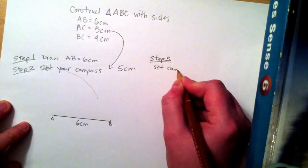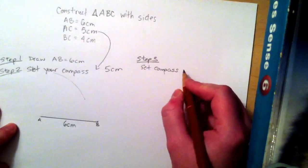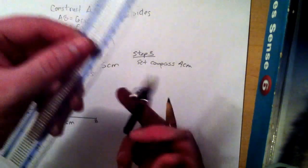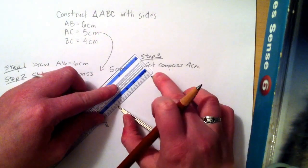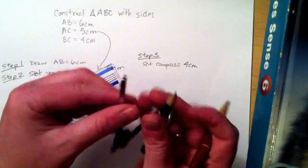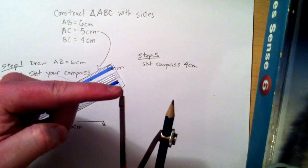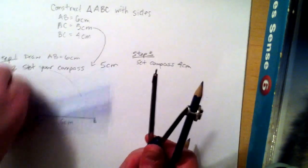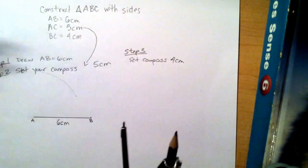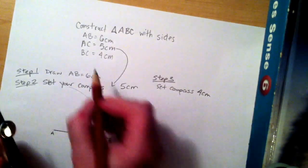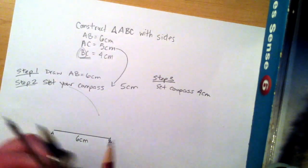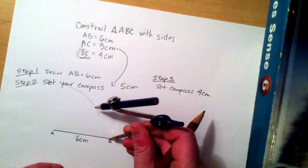Step 3 is going to be to set the compass to 4 cm because that's the length of the other side. We have a 6 cm, a 5 cm, and a 4 cm. We're going to set our compass to 4 cm, shaving 1 cm off the last measurement. The tip to the pencil is 4 cm long. This time we're doing BC which means we will put the point on B and draw an arc.